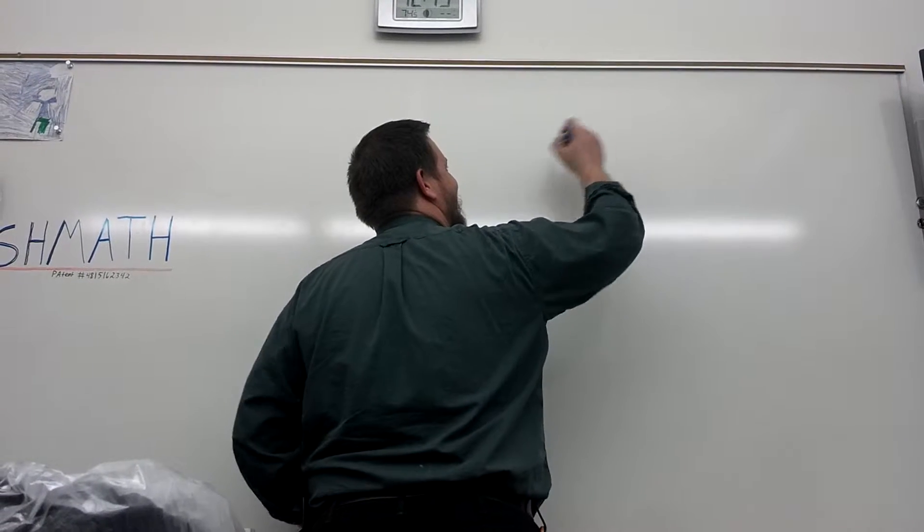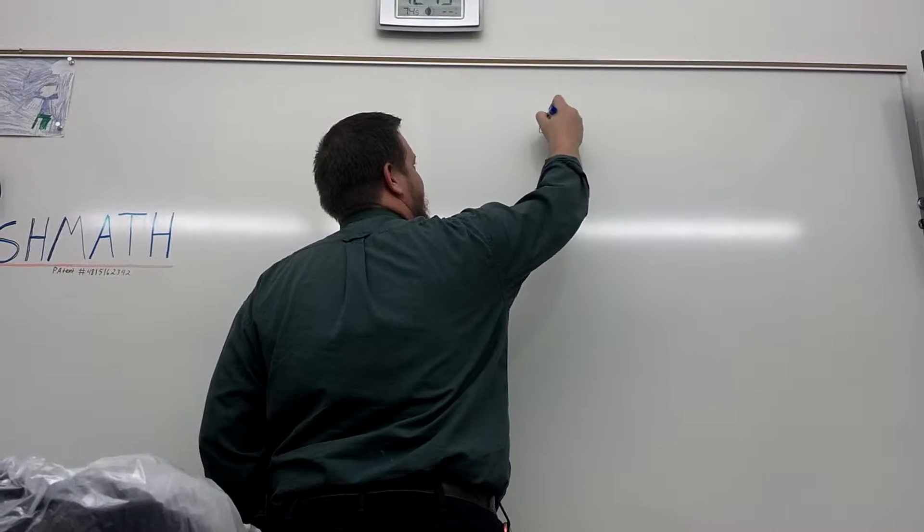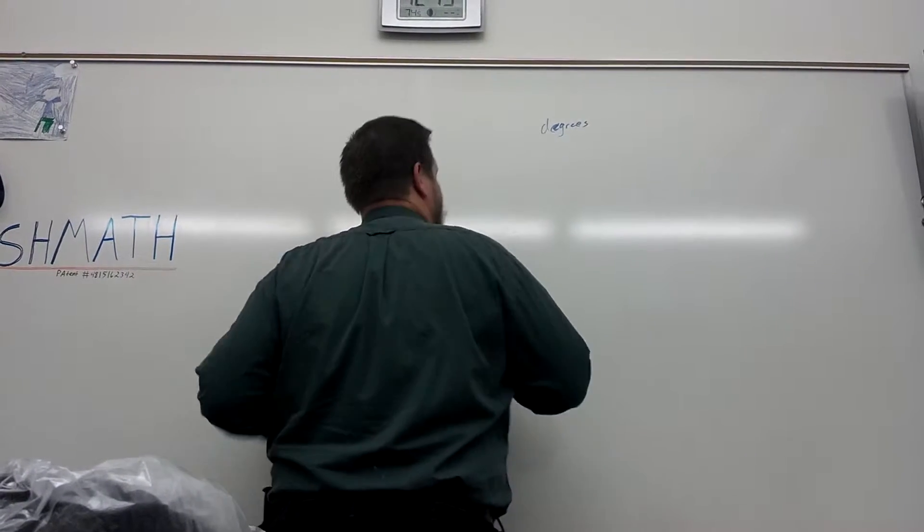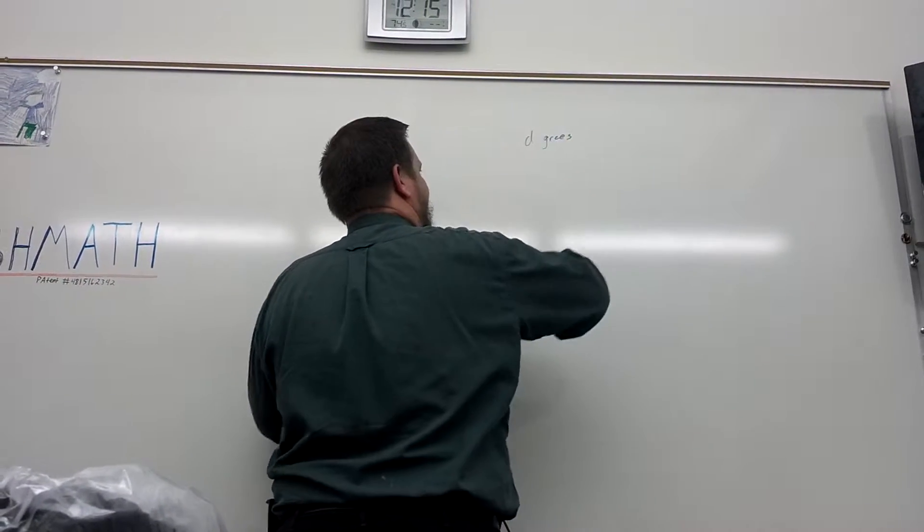Today, a radian is a word. Okay, degree, you've been measuring angles in degrees for a long time. That's a horrible looking E. What's a radian? I'm about to tell you.